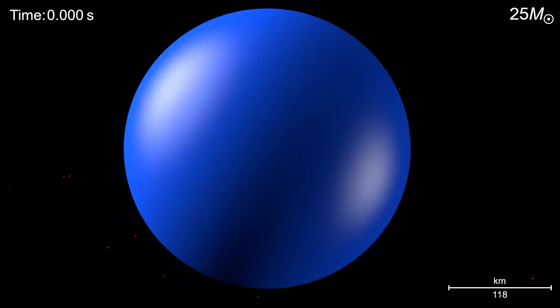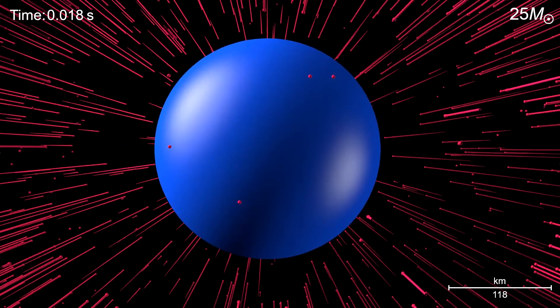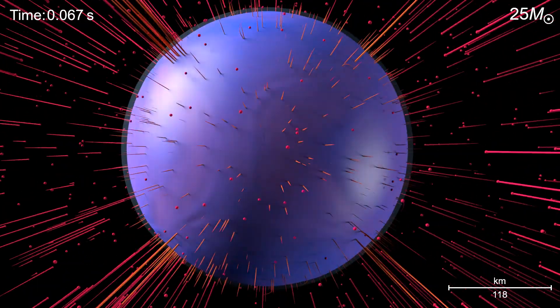After 10 million years of quiescent evolution, the core of this object becomes unstable and collapses. It bounces and a shock wave is produced, like a spherical piston.